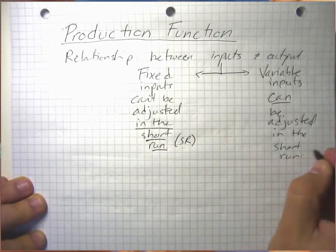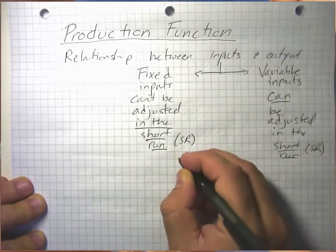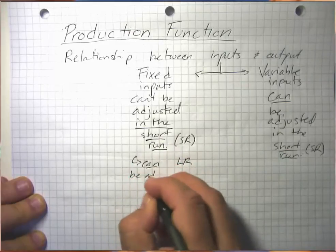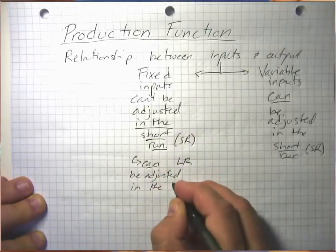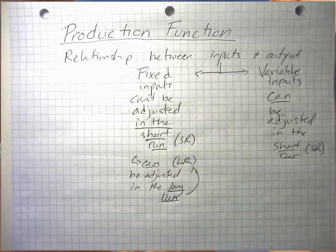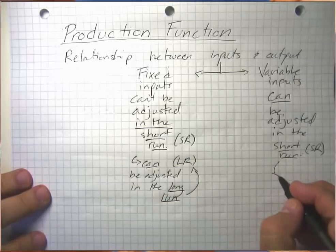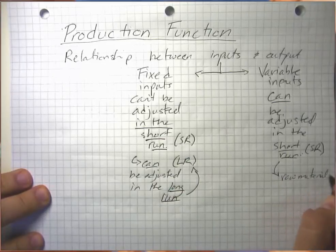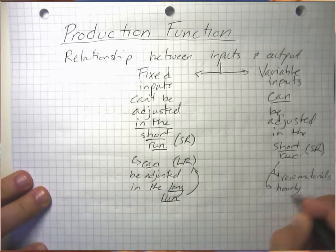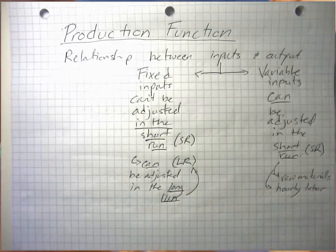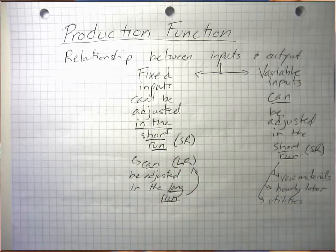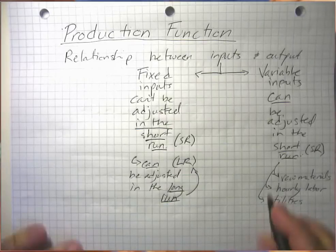I'll use SR for short run going forward. Fixed inputs can be adjusted in the long run, which I'll call LR. Variable inputs are often things like raw materials — we can order more ingredients. Could be certain kinds of labor, like hourly labor where we pay more or less depending on how much we schedule someone. Could be some types of utilities — if we stay open more hours, we'll have a higher utility bill. Could also be something like advertising.